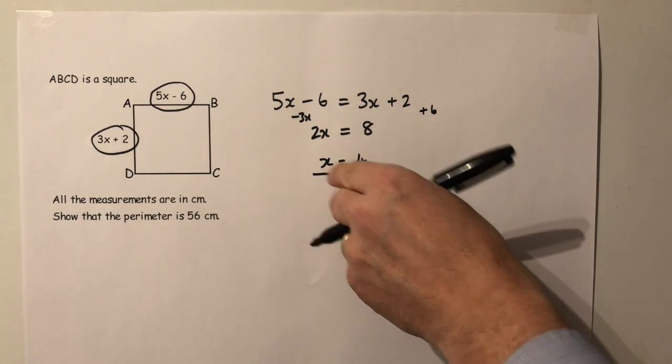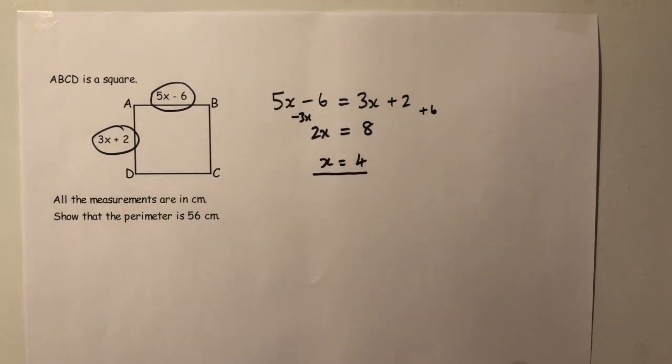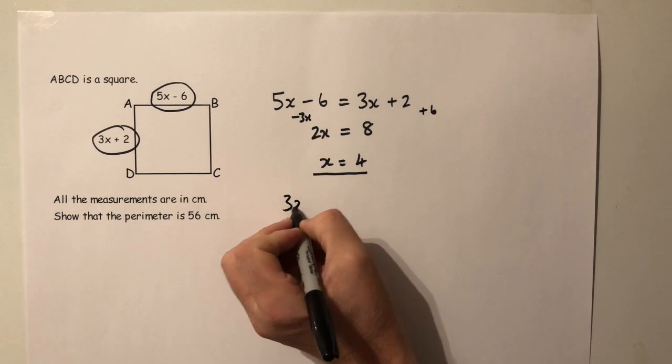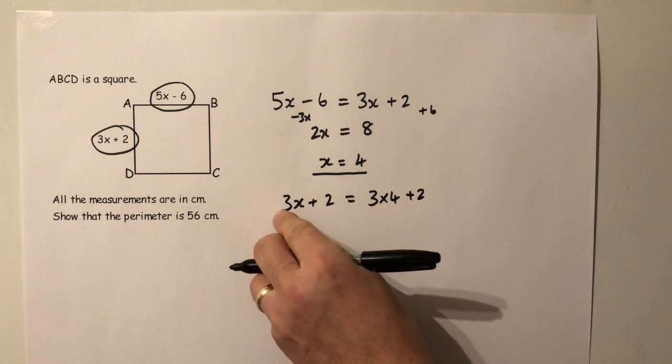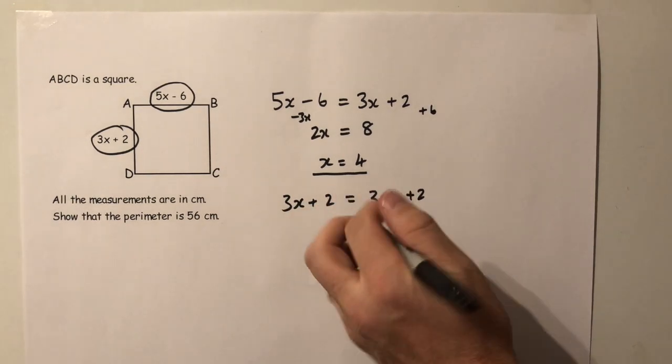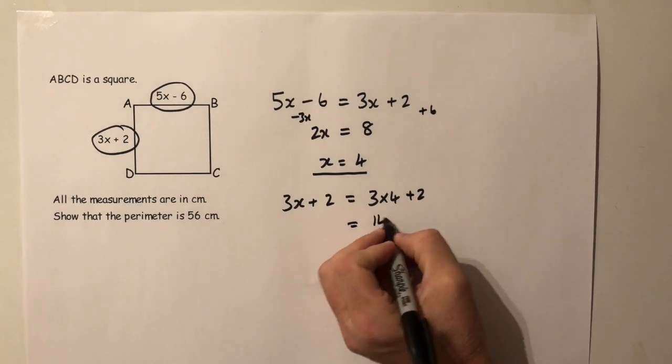If x is equal to 4, then I can put that into either here or here to find the length of a side. If I put it into 3x plus 2, I get 3 times 4 plus 2. 3 times 4 plus 2, that's 12. When I add 2, I get 14.